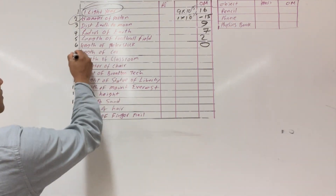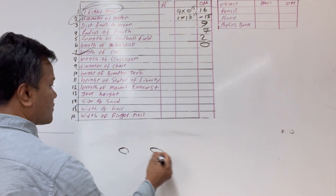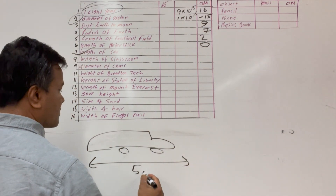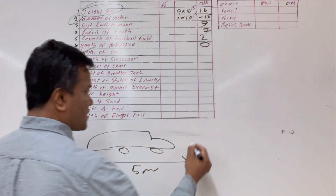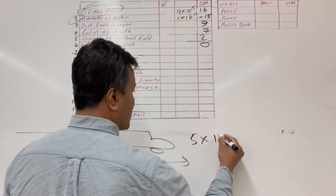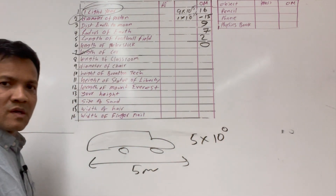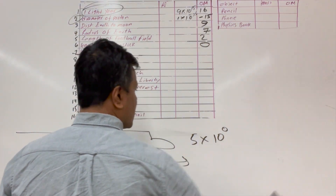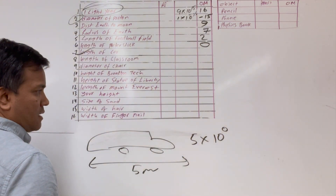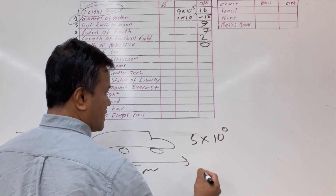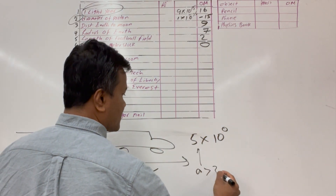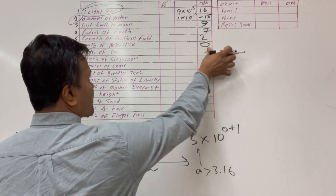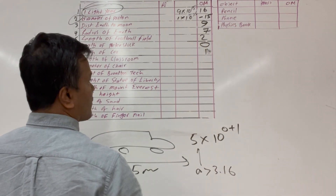The length of a car is about 5 meters. In scientific notation: 5×10⁰. Since A equals 5 is greater than 3.16, the order of magnitude is 0 plus 1, which equals 1.